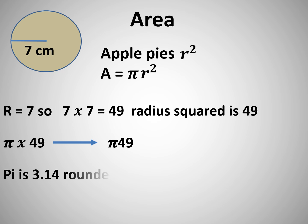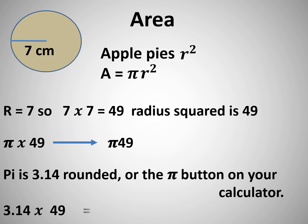Just written like that. Pi is 3.14 rounded, or use the pi button on your calculator. So let's have a look: 3.14 times 49 equals 153.9 cm. And again, we use the square because it's area.